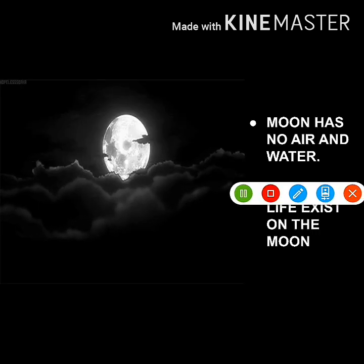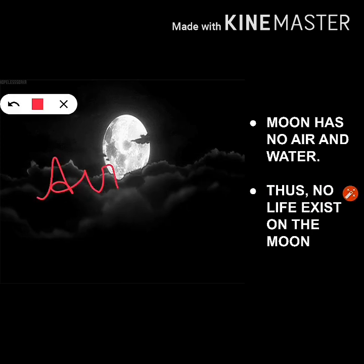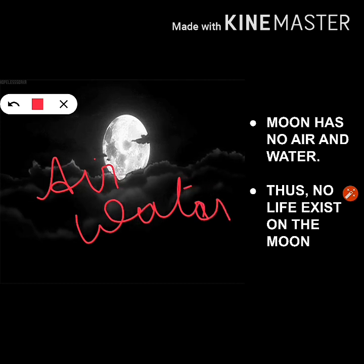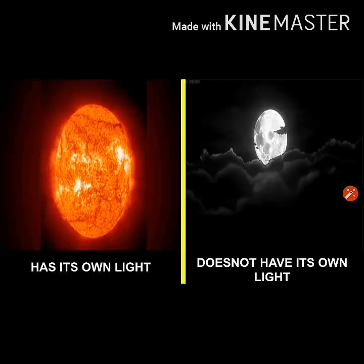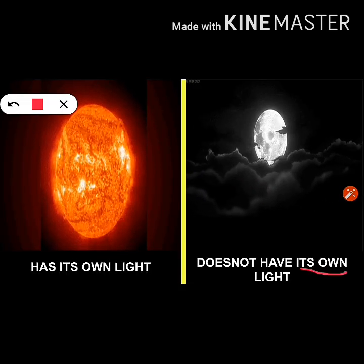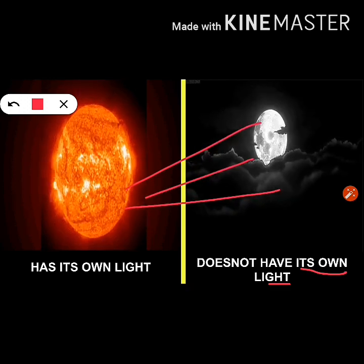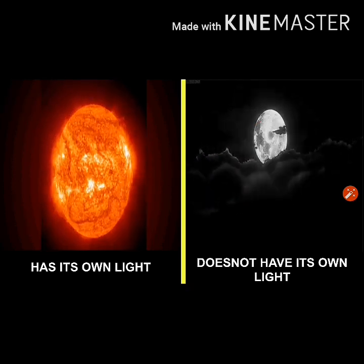Unlike the earth, the moon has no air and water. Therefore, you will not find any life on the moon. The moon also does not have its own light — it reflects the light of the sun.